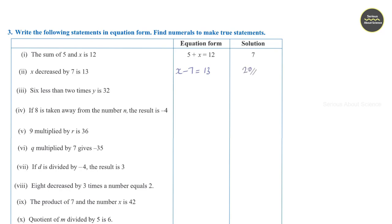Third question: 6 less than 2 times y. So we write 2 times y minus 6 is equal to 32. Solving for y, the answer is 19.